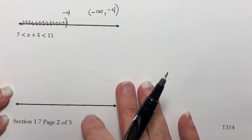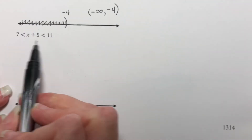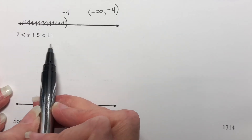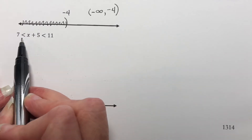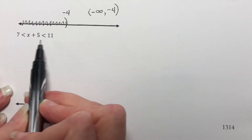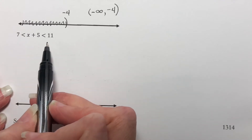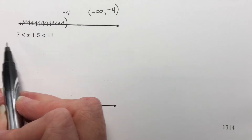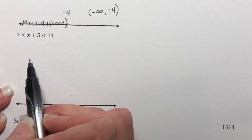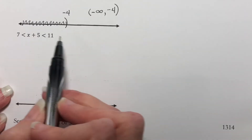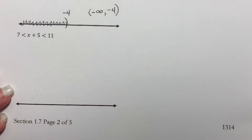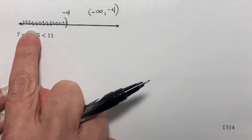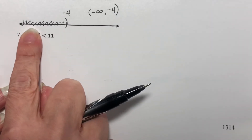Now let's look at this one. This is essentially a three-sided inequality. Your two signs need to point the same direction, but they do not have to match — I could have an equal to on one of them but not the other. As you're working them along, you should be able to cover up the center and one of the two signs and have something that's true.